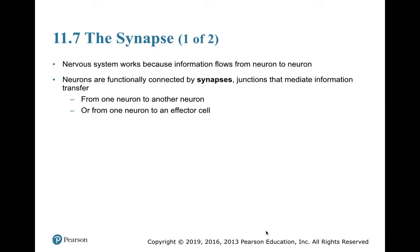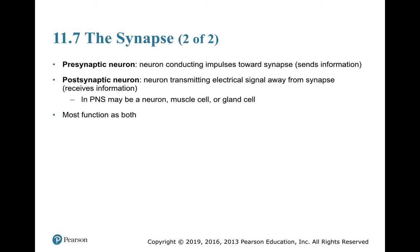Synapses can be from one neuron to another neuron, which we'll talk mostly about today, or from one neuron to an effector cell, like when causing a muscle to contract. When talking about two neurons, we have the presynaptic neuron, which sends signals to the synapse, and the postsynaptic neuron, which receives the signal. In the peripheral nervous system, that postsynaptic cell might be a neuron, a muscle cell, or a gland.